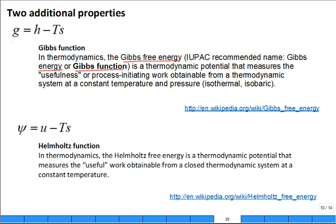It's defined as a property G equal to H minus TS. And also the Helmholtz function is equal to internal minus TS. So you can learn more about what the physical interpretation or utility of these functions are, but they are important, especially in chemistry for the Gibbs function.